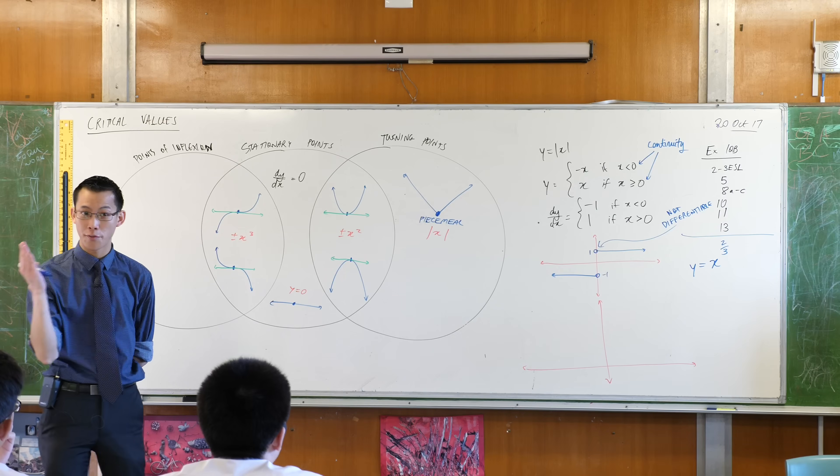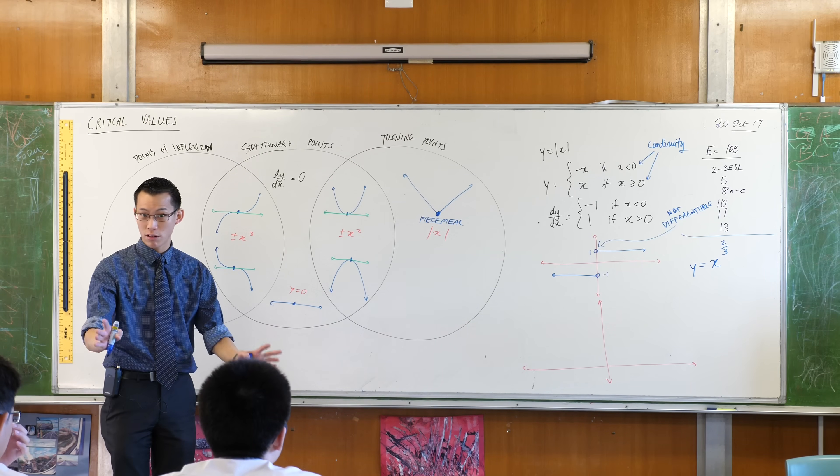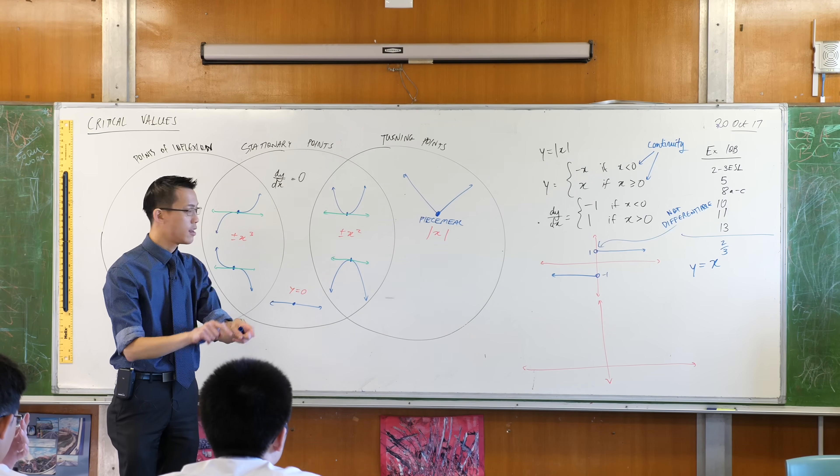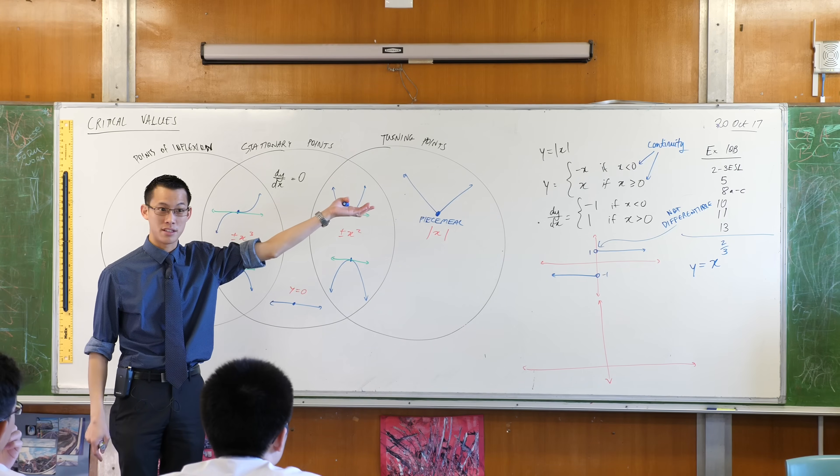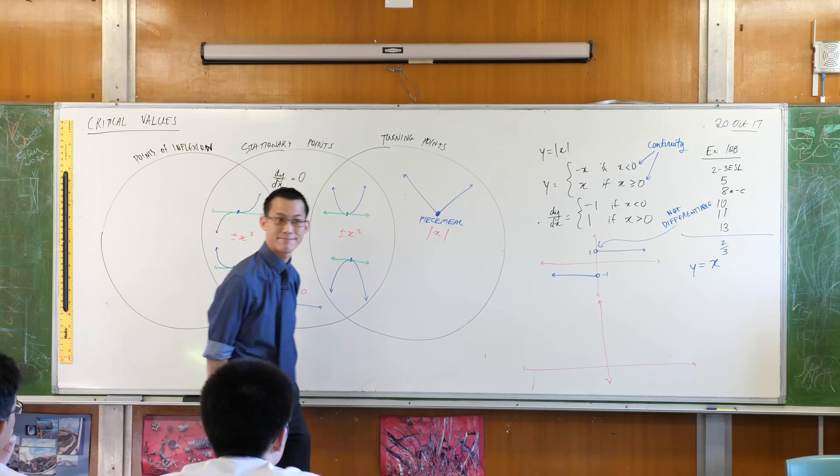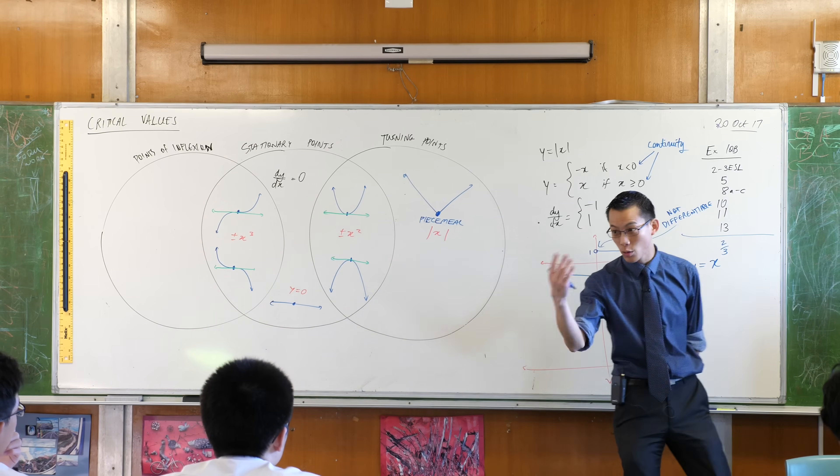I could plot points. That should always be your first go-to like, I've got no idea what to do, I'm just going to put some numbers in. And it turns out it's quite easy to put some numbers into this. Give me a number you'd like to put in. x equals 1, sure.